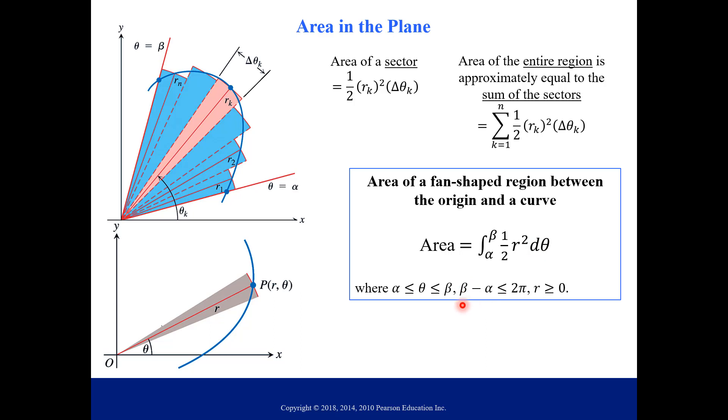So this number right here, beta minus alpha is less than 2π. That's just a side note to mention that we don't want our angles to overlap. Our region is defined within 0 to 2π or something less than that. The radius is considered positive here. The area differential is dA, and that's just one half times r squared d theta. So d theta, you can think of it just like delta theta, like we called it before.